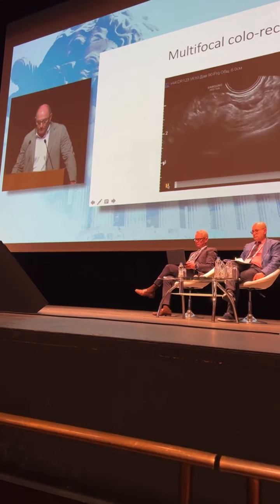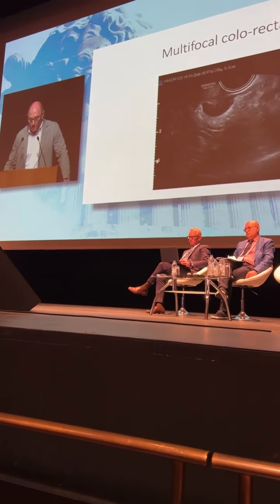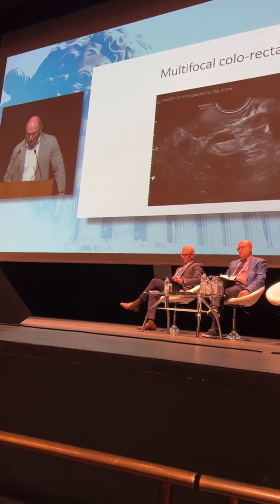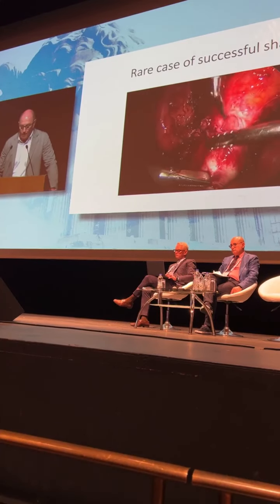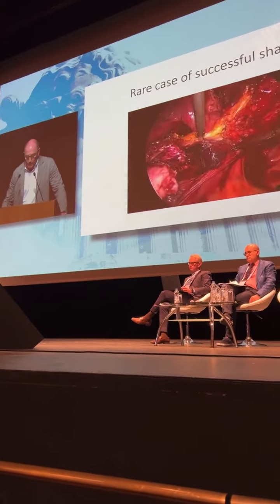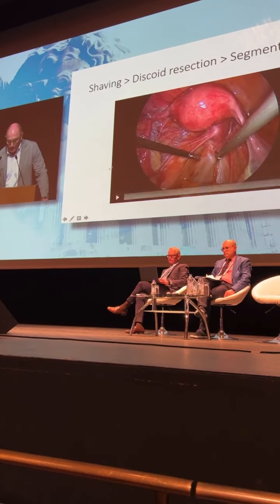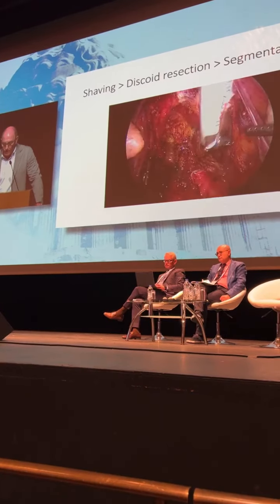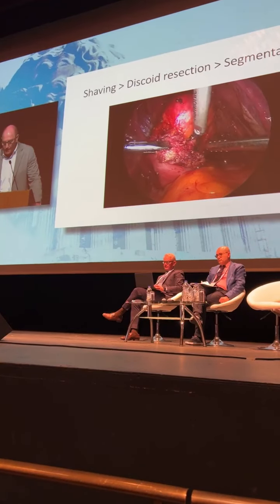We have to plan radical surgery. Another case confirmed the value of ultrasound examination: we found multifocal colorectal nodules, which is an indication for colorectal resection instead of shaving or discoid resection. I prefer to cover this rectal wound with 3-0 or 4-0 suture to prevent anastomosis leakage. In this case, we changed our strategy from shaving to discoid resection and ultimately decided to do segmental resection because we had underestimated the size and depth of the nodule.